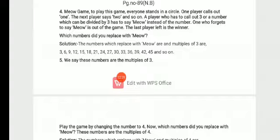So when the game starts, the numbers divisible by three are what we call meow. The numbers we replace with meow are the multiples of three: three, six, nine, twelve, fifteen, eighteen, twenty-one, twenty-four, twenty-seven, thirty, thirty-three, thirty-six, thirty-nine, forty-two, forty-five and so on.